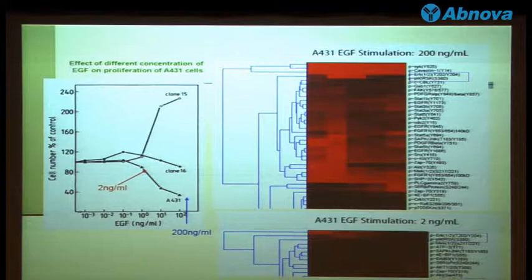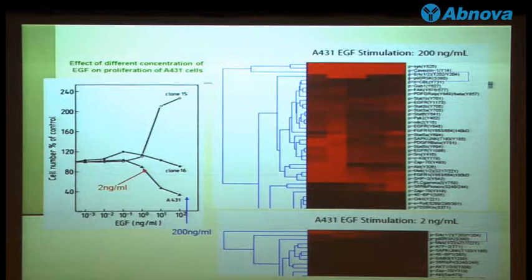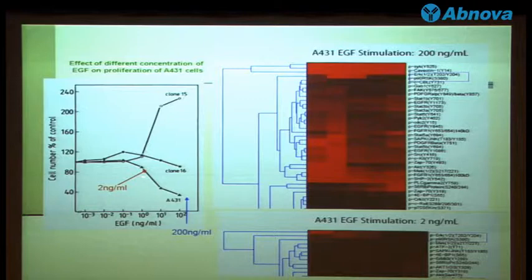So for the MDA-MB-231 cell, it's very different. It has a lot of EGF receptors, so once you add EGF, the proliferation of that cell is going to be suppressed. 2 nanograms per ml is around like 20% suppression, 200 is like 80% suppression.